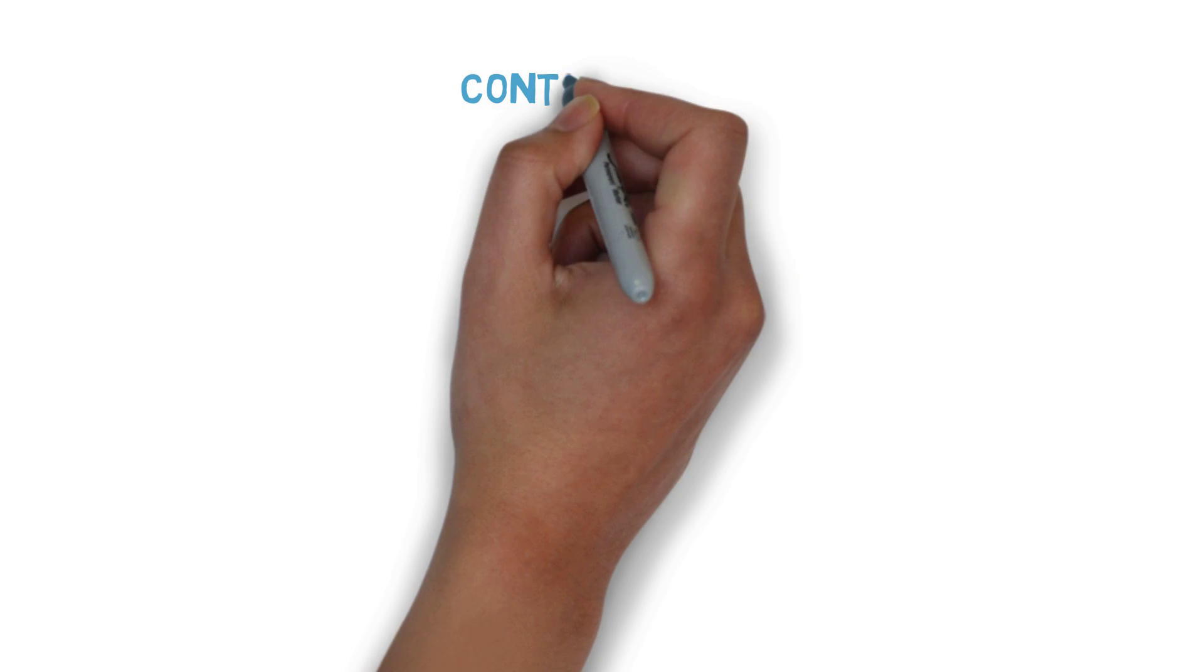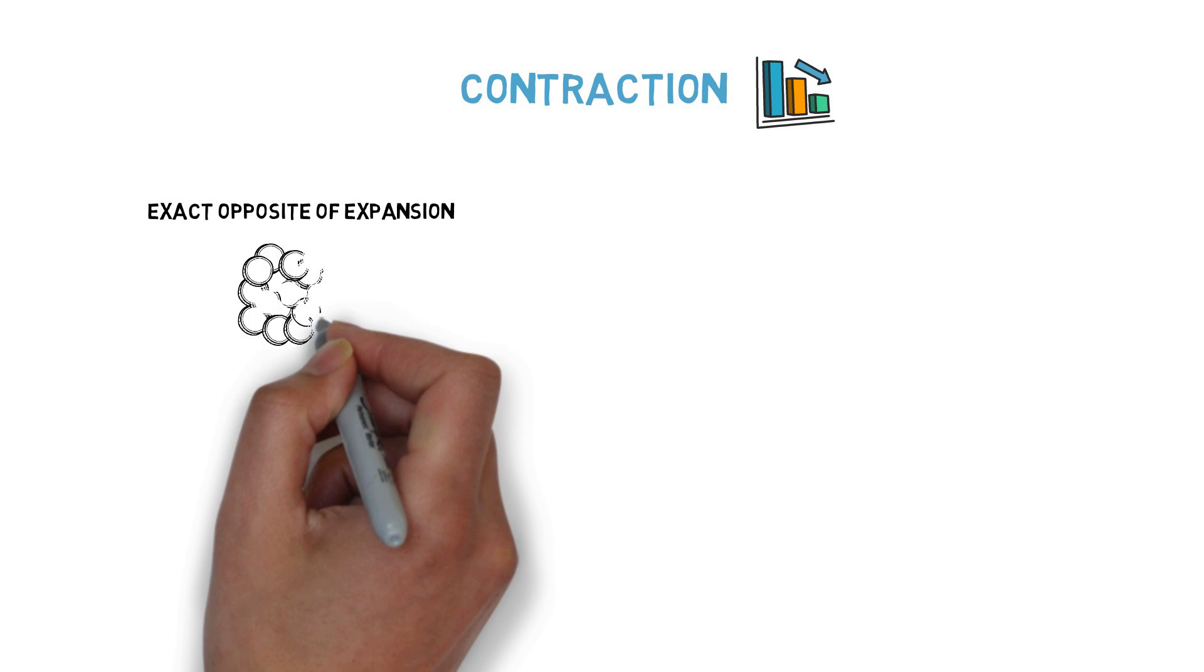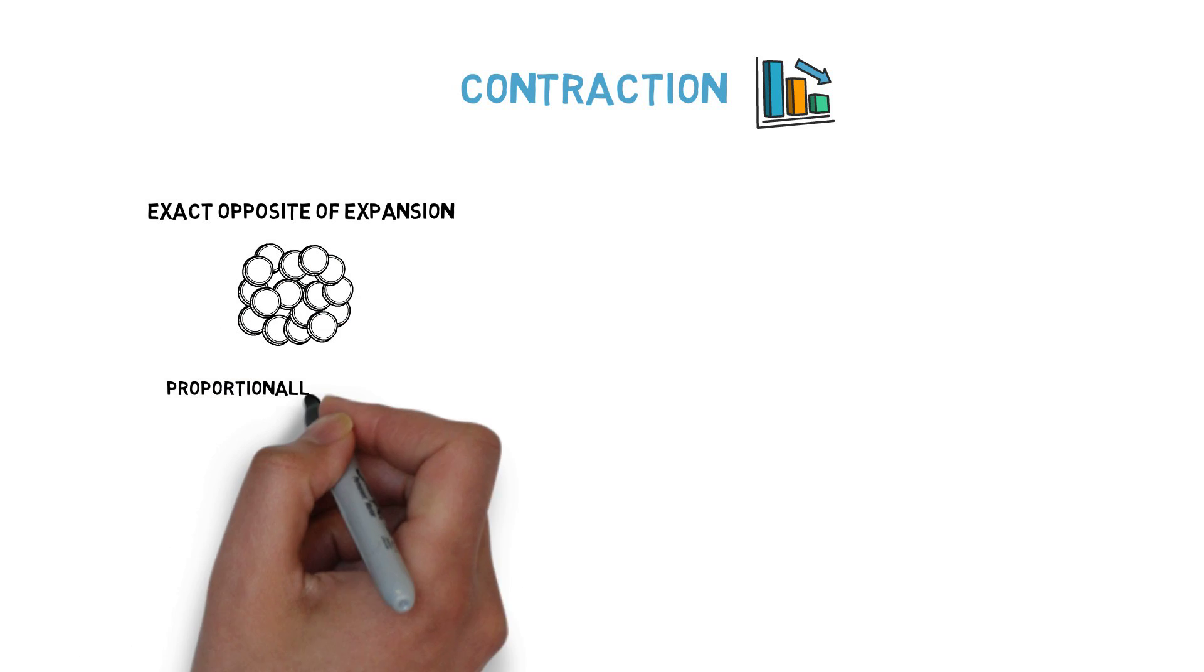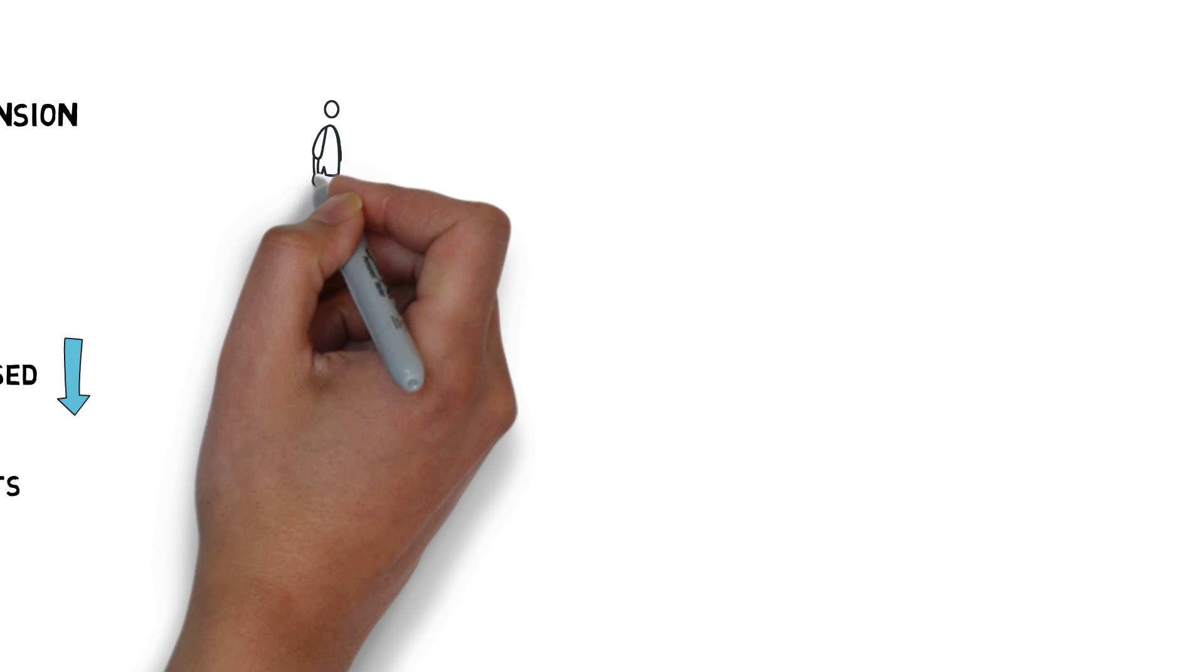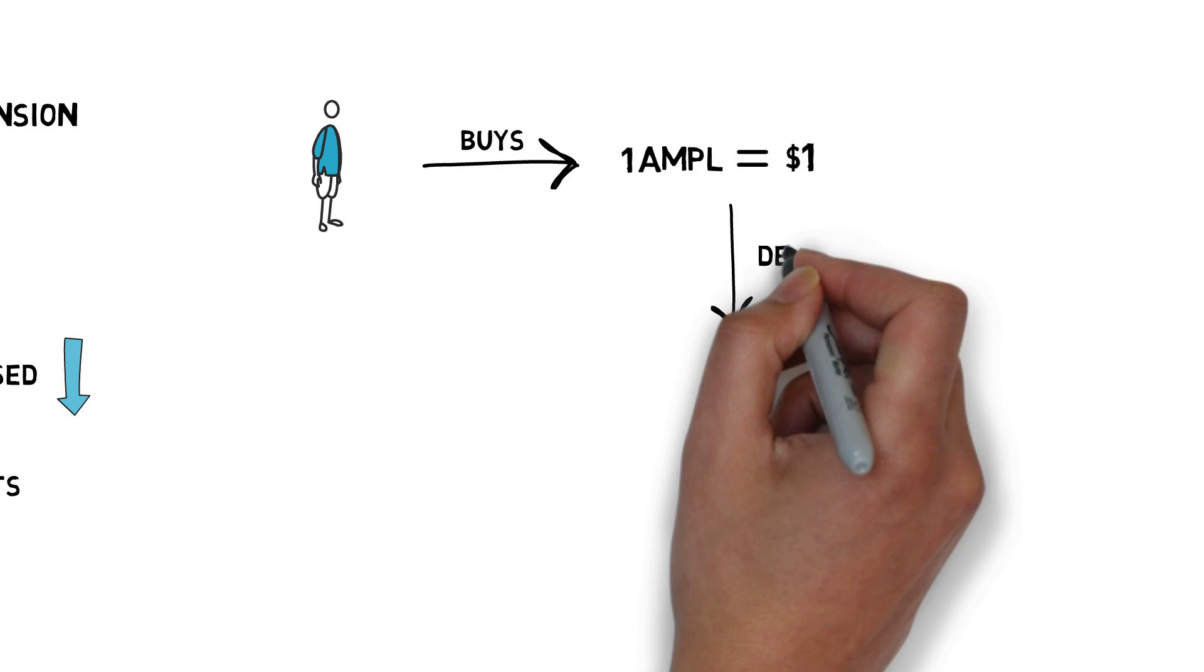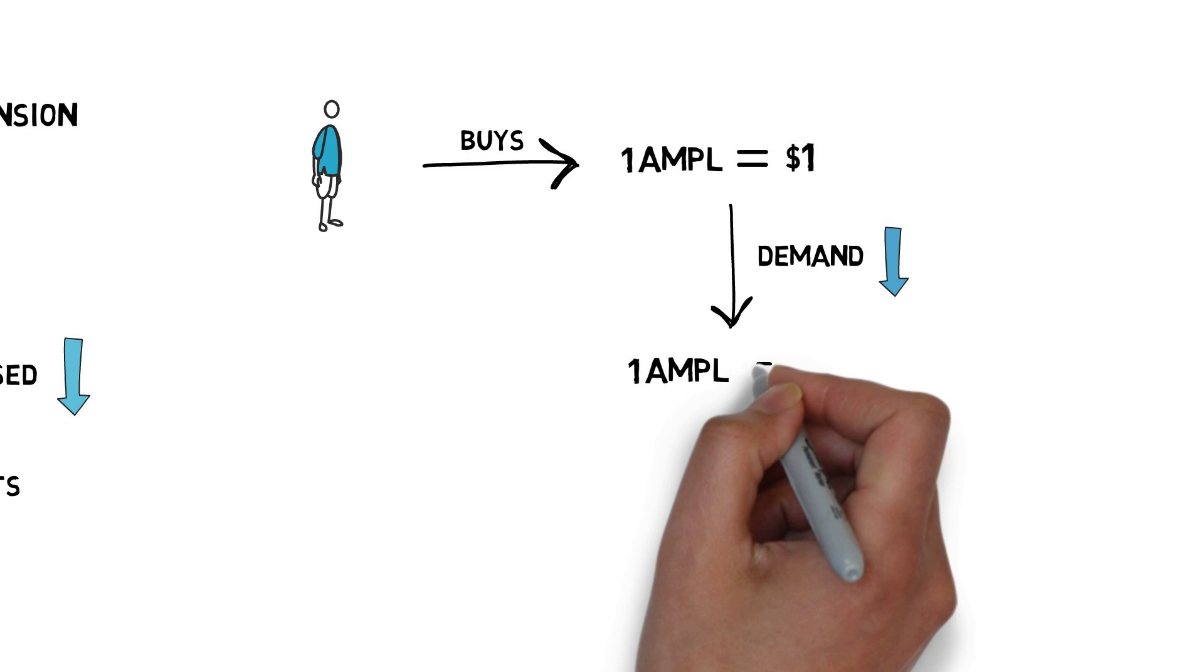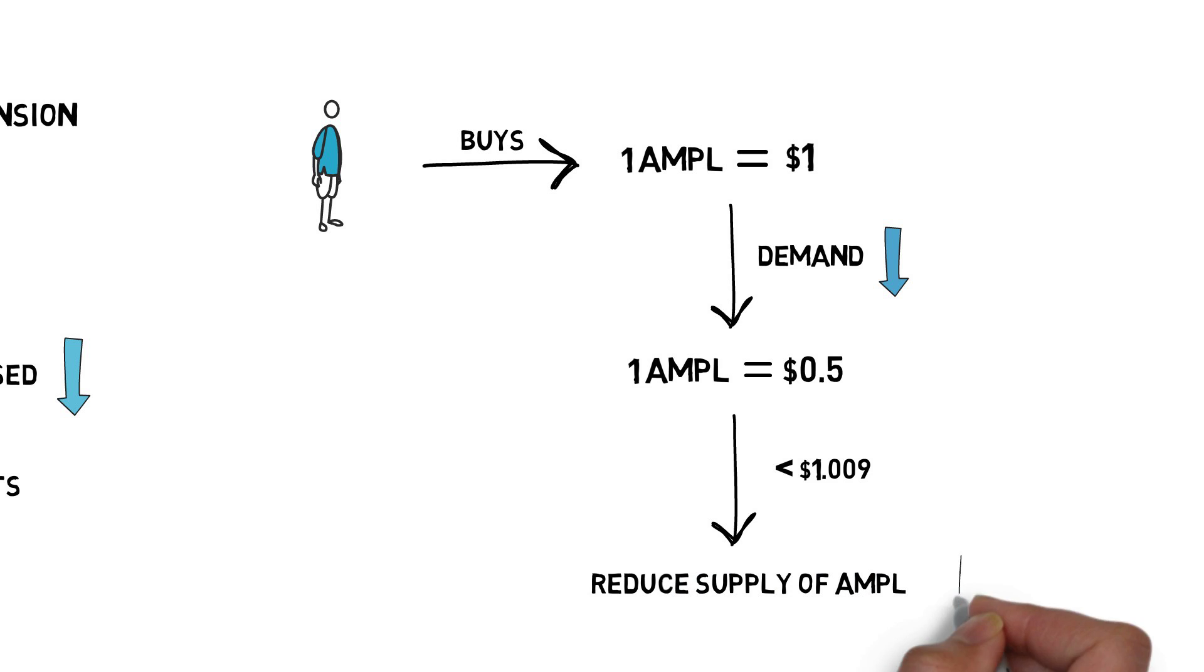Contraction: As expected, this is the exact opposite of the expansion state. When the system is in the contraction state, the supply of Ample tokens is proportionally decreased across all wallets holding Ample tokens. So if Alice buys one Ample for one dollar and due to a decrease in demand, the price of Ample drops to half a dollar, the system will reduce the supply of Ample. Alice ends up with 0.5 Ample worth half a dollar as the price of one Ample reverts back to one dollar.